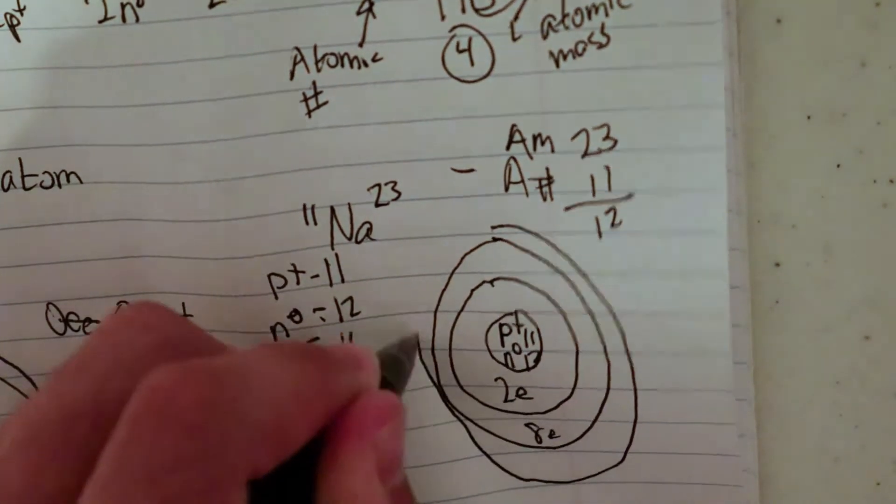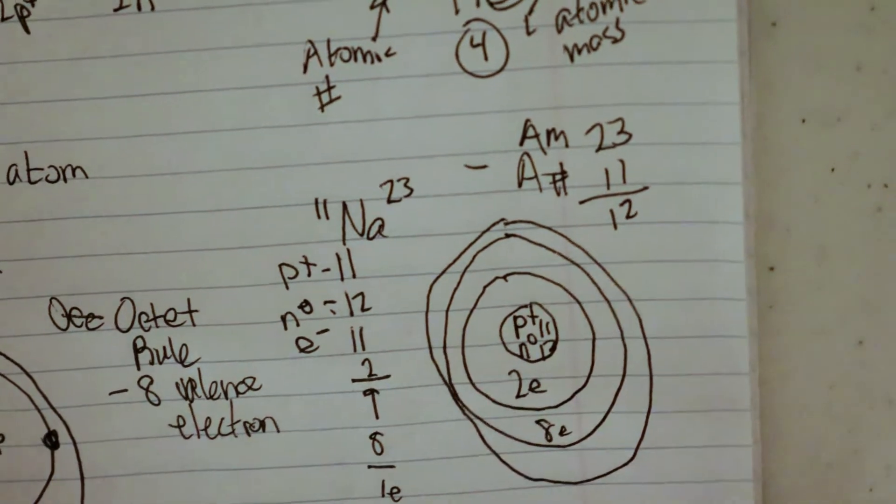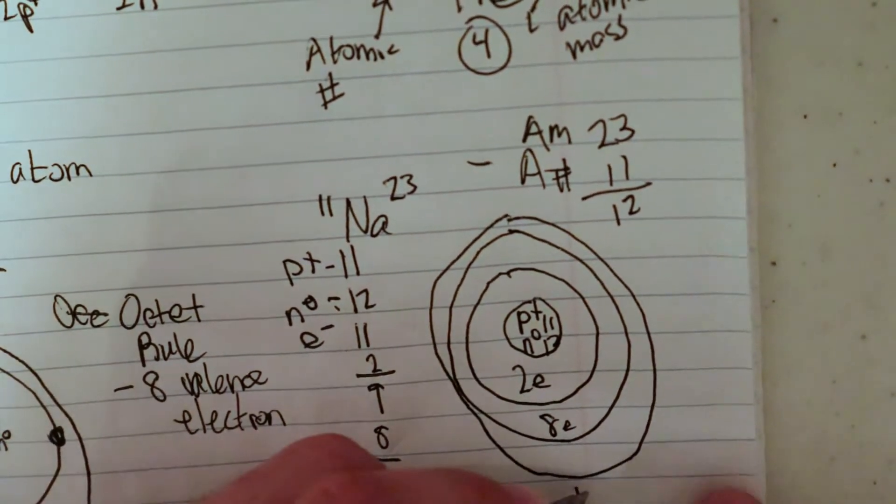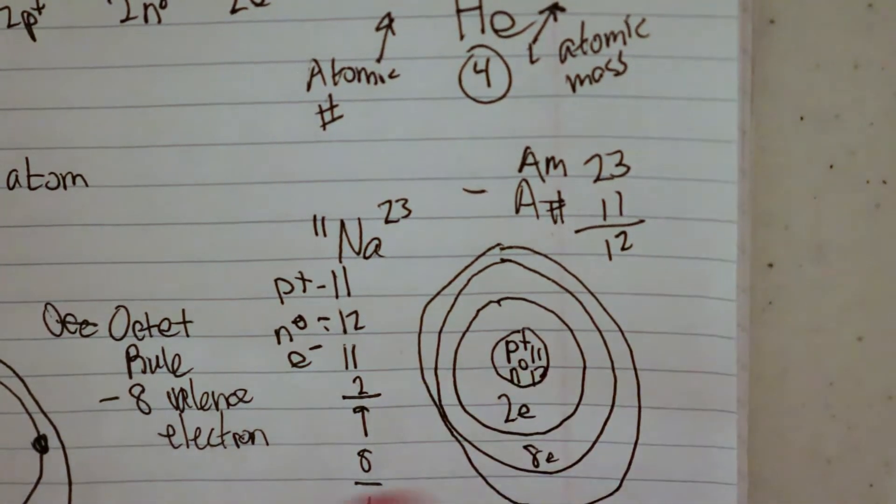So I need to draw one more ring, because we have the octet rule, and we can't fit more than eight in that one. So we're going to move up one. We're going to put one electron here on this outer, on this third energy level.